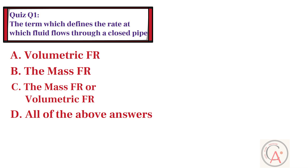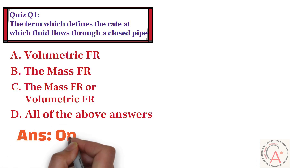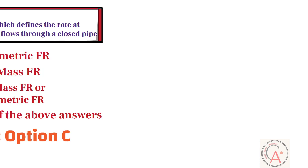The correct answer for this question is option C — it can be defined as either the mass flow rate or volumetric flow rate.